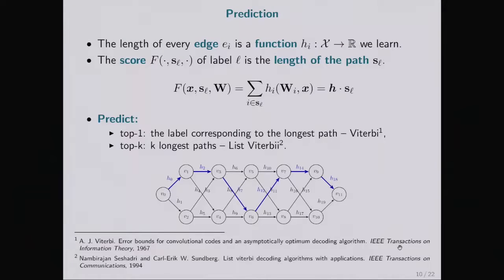How to do it? Each edge corresponds to a function we learn. This function, given some features, returns a weight or the length of the corresponding edge. The score of a label is the weighted length of a corresponding path. LITTLES predicts the label corresponding to the longest path, or the K labels corresponding to K longest paths. Those can be found efficiently using dynamic programming.